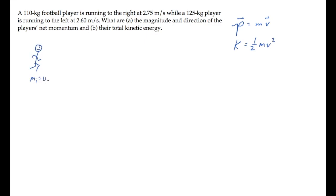The first player is running toward the right at a speed of 2.75 meters per second. We'll call to the right the positive x direction. The second player is running to the left at a speed of 2.60 meters per second. So the first player has a momentum directed to the right, while the second player's momentum is directed toward the left.